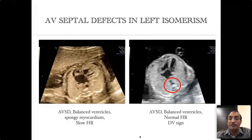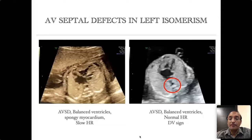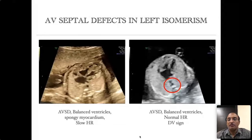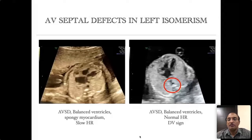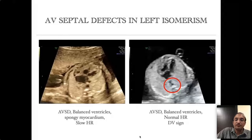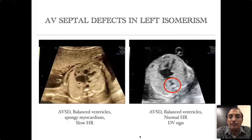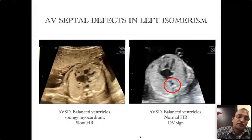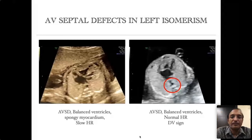The prognostic importance is that unbalanced AV septal defect and AV septal defect with the double vessel sign of interrupted IVC are part of heterotaxy syndrome and are not associated with Down syndrome, so karyotyping is not needed. However, a balanced AV septal defect has a 50% association with trisomy 21, and that is where you would perform amniocentesis and karyotyping.